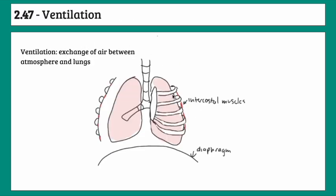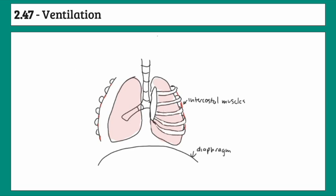Ventilation is the exchange of air between the atmosphere and the lungs — in other words, it's breathing. Two aspects play a role in ventilation: the intercostal muscles and the diaphragm.